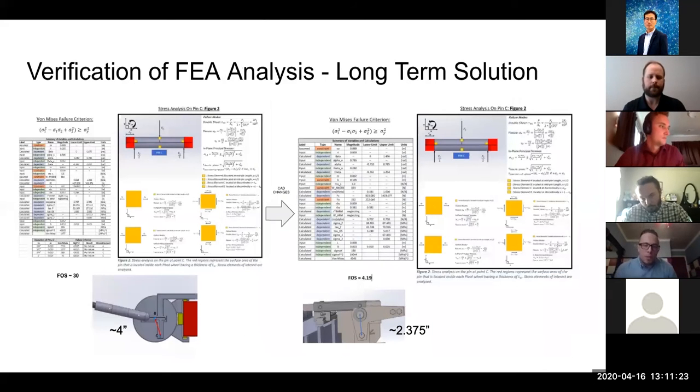Due to the limits in the FEA analysis, we wanted to validate it using some hand calculations. We modeled the pin that was assumed to be failing in double shear. The hand calculations basically validated the model. It did come up with a factor of safety that was slightly higher around four rather than two.